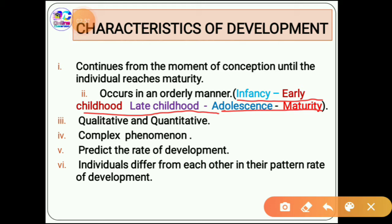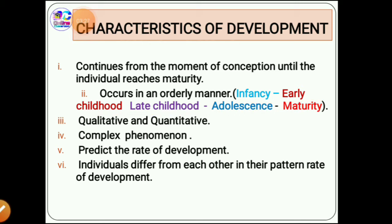The third characteristic is that development involves both qualitative and quantitative changes — when a child grows physically, the qualitative aspects of personality also develop. It is also a complex phenomenon affected by factors such as sex, physical condition, and intelligence. Development rate can help predict whether a child is a slow learner or a superior child. Lastly, individuals differ from each other in their rate of development.